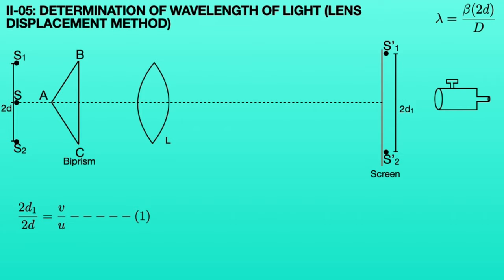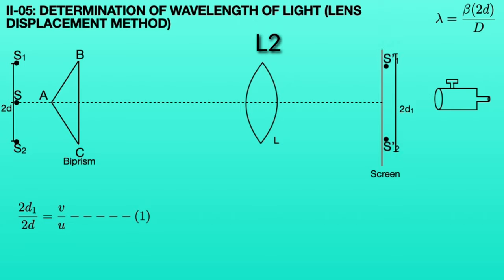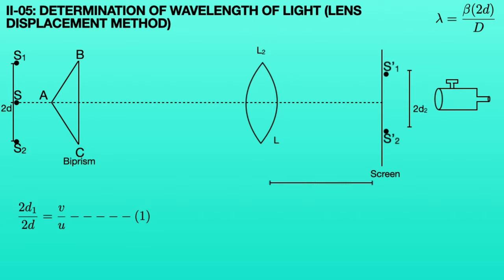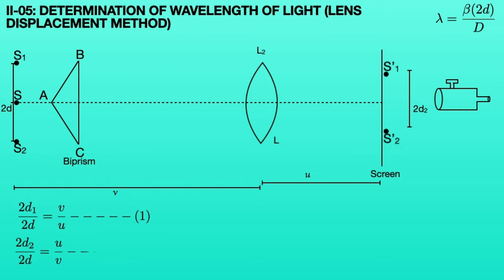If the lens is displaced to position L2, then the virtual images S1' and S2' come closer together on the screen. These virtual image distances can be measured with the microscope by moving up and down. If the distance between these virtual images is 2D2, then automatically the distance between the lens and the screen becomes U and the distance between the source and the lens becomes V. By using the lens displacement method, we can write: 2D2 divided by 2D is equal to U divided by V. This is the second equation.